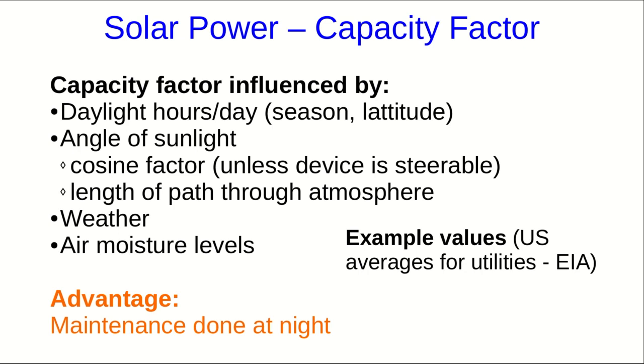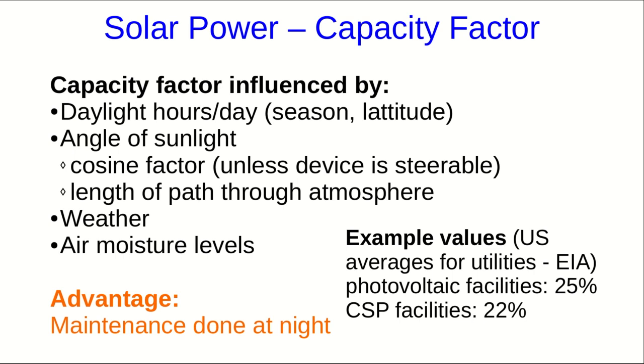Some example values from the U.S. Energy Information Administration show that in the U.S., photovoltaics and CSP facilities both have typical capacity factors in around the 20s of percent.